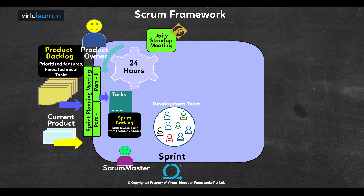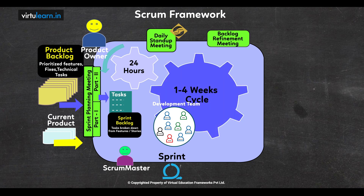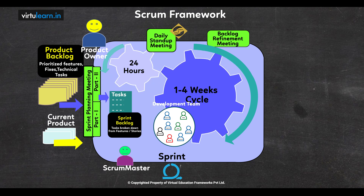During the sprint, the team spends an average of 10 to 20 percent of their time refining the product backlog so that it will be ready for the upcoming sprint planning. Sprint execution covers all the working days in the sprint — in a 2-week sprint, that is usually 10 business days, and the team sprints through all 10 days.